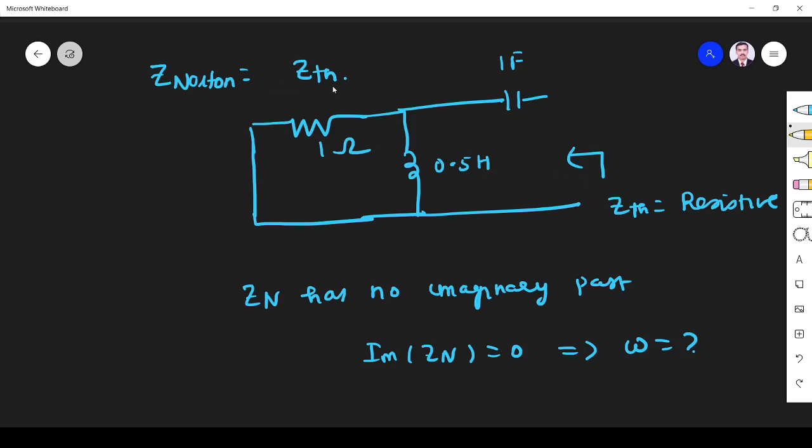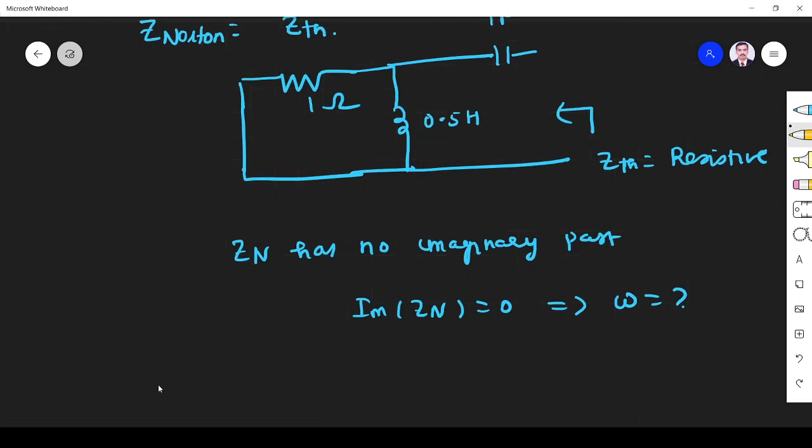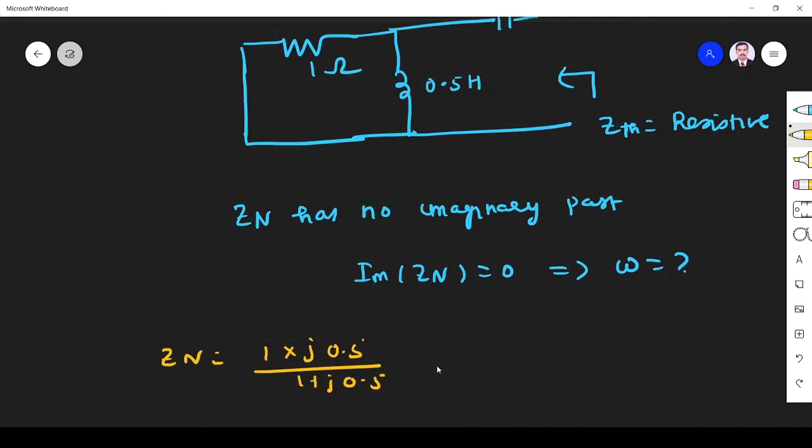Z_Norton is nothing but Z_terminal. These two impedances are in parallel and it is in series with that. So Z_Norton is equal to 1 times j0.5ω divided by 1 plus j0.5ω...